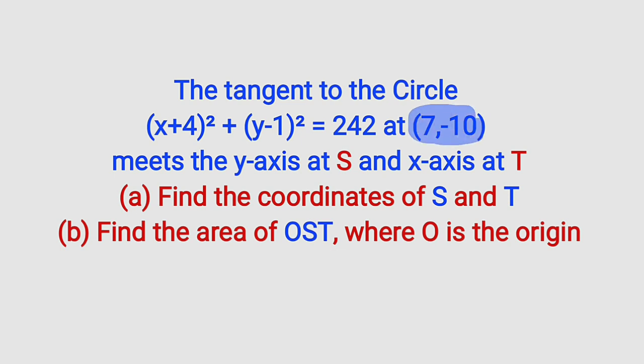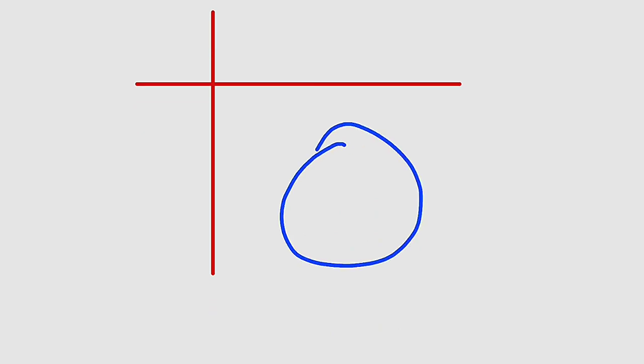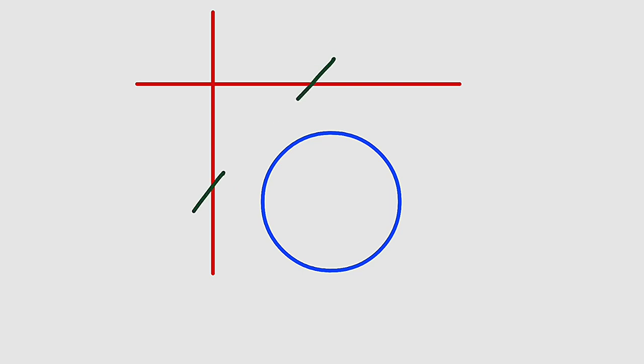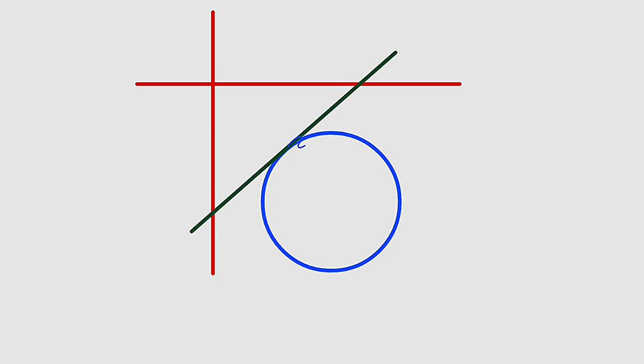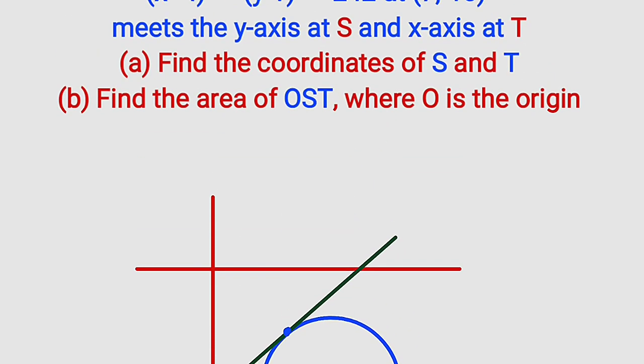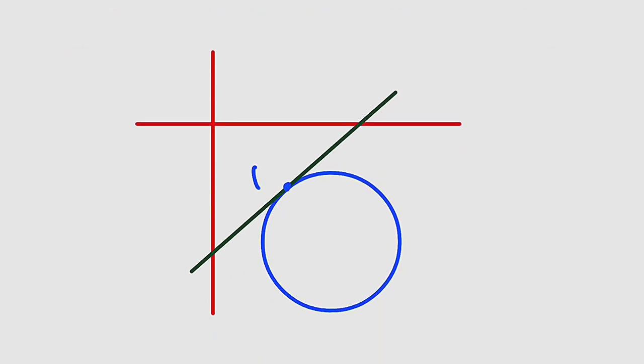You should take note that this point where x is positive and y is negative is in the fourth quadrant. So if we have the y-axis like this and the x-axis like this, we are interested in this region. We are going to draw our circle here, so the tangent to this circle cuts the y-axis and x-axis. At the point of contact we have x equal to 7 and y equal to negative 10.